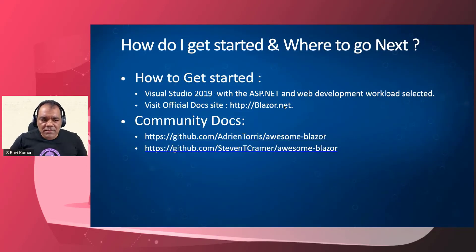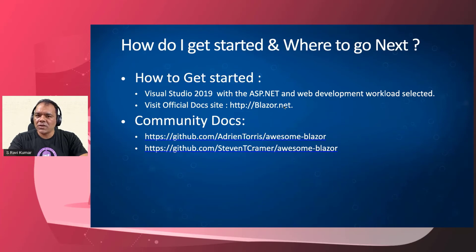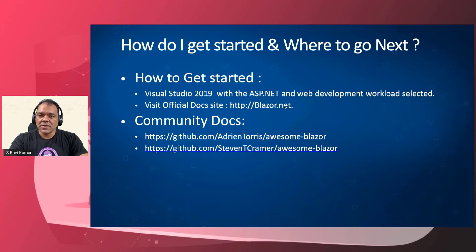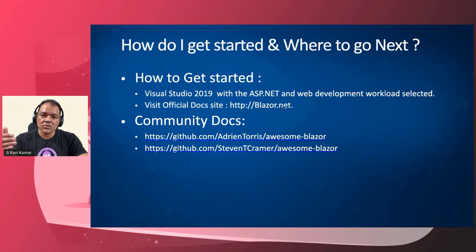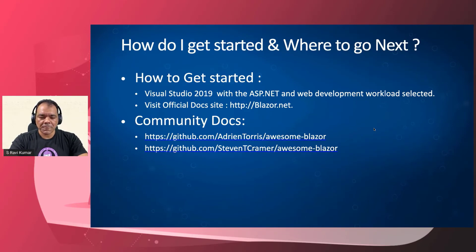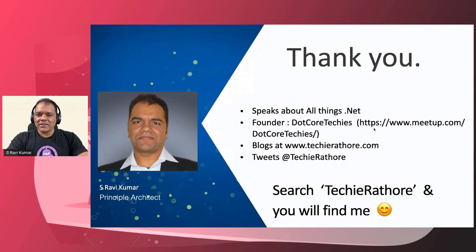To get started with Blazor, Visual Studio 2019 by default includes Blazor projects when you install with the ASP.NET workload. You can visit the official doc site at blazor.net for a step-by-step guide. Apart from this, there are a lot of community resources available — like Steven Sanderson's Awesome Blazor and Adrian Torres' Awesome Blazor GitHub repositories, which have a comprehensive list of all Blazor contributions from the community and Microsoft, as well as tutorials and everything else. Using all these resources, you can get started with Blazor very easily.